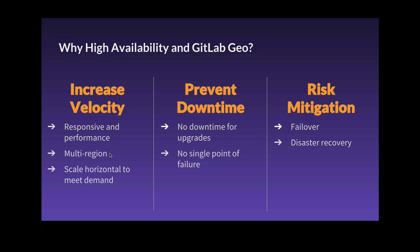Next is to prevent downtime. Reducing the load by breaking out heavily used services into separate nodes will prevent tasks from building up and the potential for your application to go down. Additionally, HA allows you to run upgrades without any downtime for your development team at all. GitLab releases new features, bug fixes, and security patches on a monthly basis, so keeping up to speed and utilizing these updates is important in an HA setup.